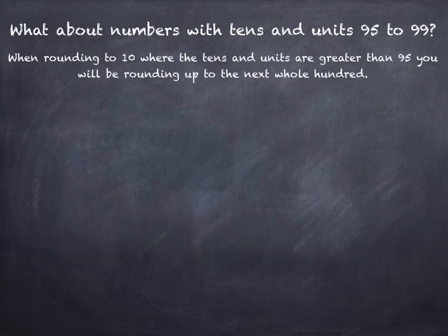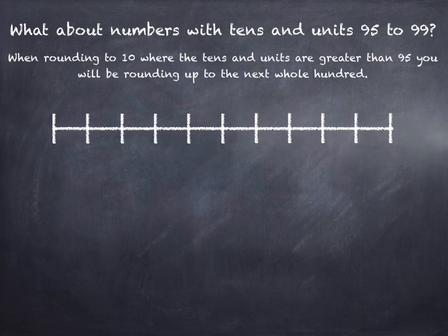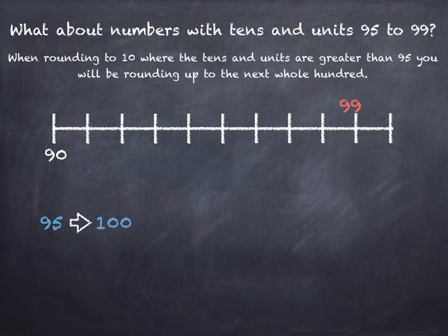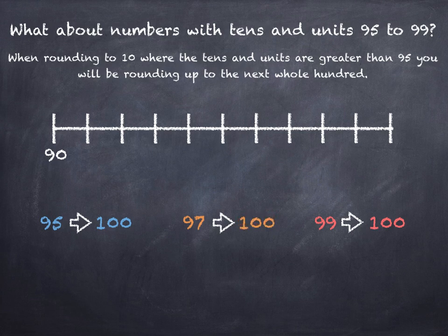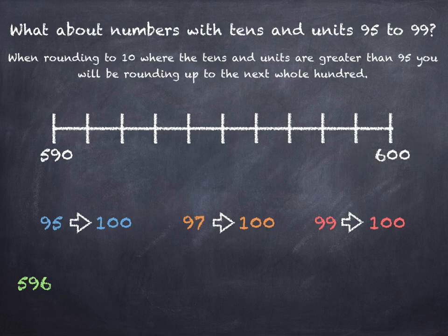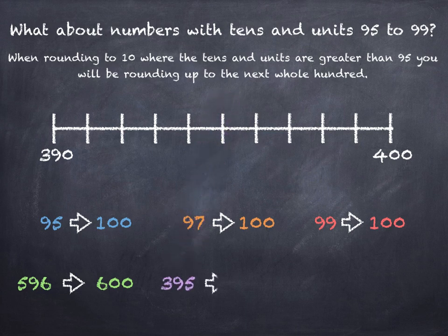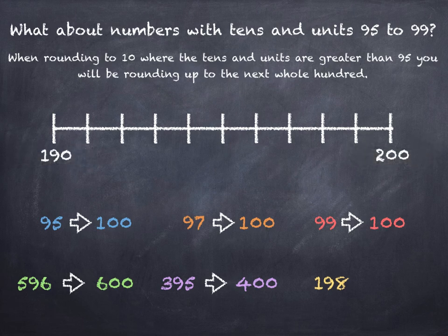Now what about numbers with tens and units 95 to 99? When rounding to the nearest 10 where the tens and units are greater than 95, you're effectively rounding to the next whole 100. 95 rounds to 100, 99 rounds to 100, 97 rounds to 100. And if we take something like 596, it sits between 590 and 600 and rounds to 600. 395 sits between 390 and 400 and rounds to 400. And 198 sits between 190 and 200 and rounds to 200.